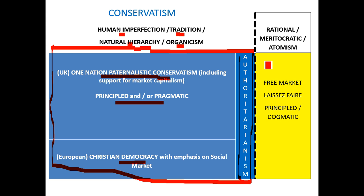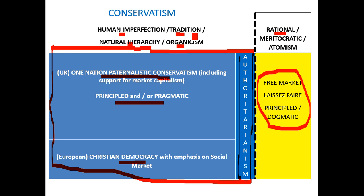Conservatism has also had, certainly from the late Victorian times onwards, another minor strand who were essentially classical liberal in their outlook. Rather than human imperfection, they believed in rationalism. Rather than natural hierarchy, they believed in meritocracy. Rather than organic society, they believed in atomism. But like the authoritarian strand, for much of conservatism's existence, they were a minor strand.